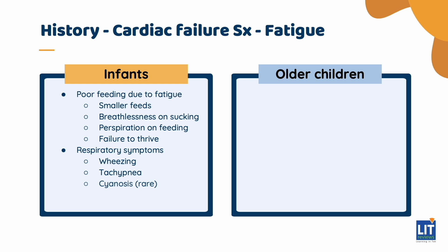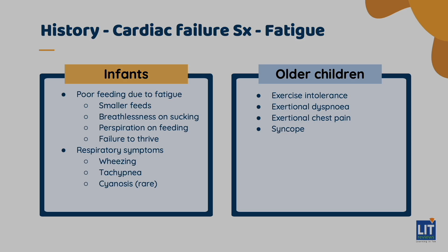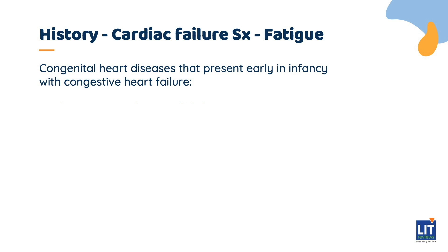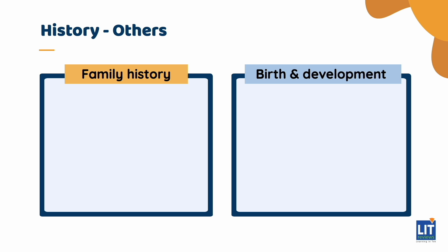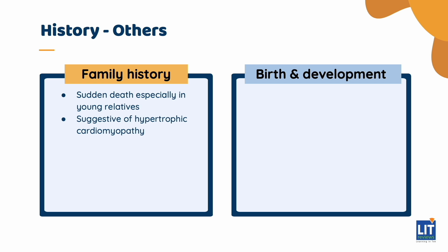In older children, features of concern include exercise intolerance, exertional dyspnea, exertional chest pain, and syncope. Congenital heart diseases that present early in infancy with congestive heart failure include large ventricular septal defects, a large patent ductus arteriosus, and critical aortic or pulmonary stenosis. It is also important to ask for a family history of sudden death, especially in young relatives, suggestive of hypertrophic cardiomyopathy, or a history of siblings with congenital heart disease.